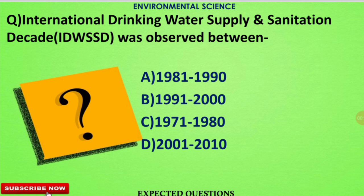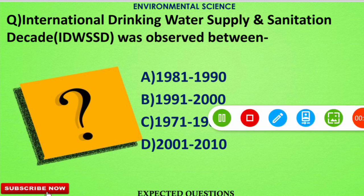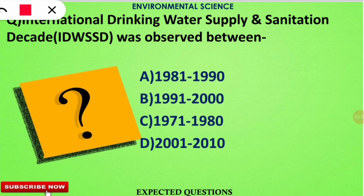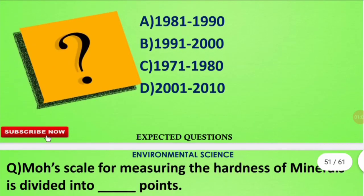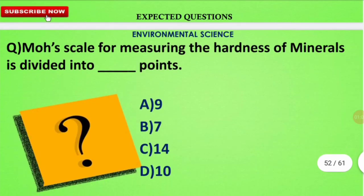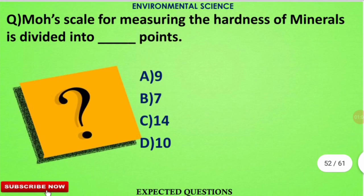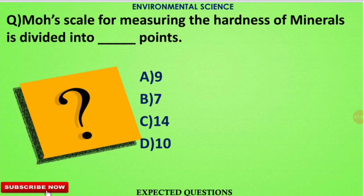The first question is: the International Drinking Water Supply and Sanitation Decade (IDWSSD) was observed between which of the following years? The correct option is option A — the decade between 1981 to 1990 is known as the International Drinking Water Supply and Sanitation Decade.